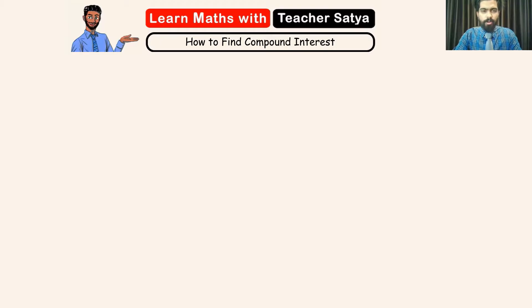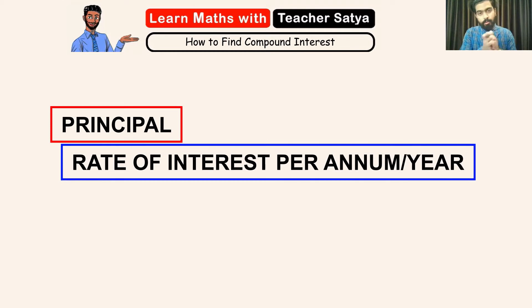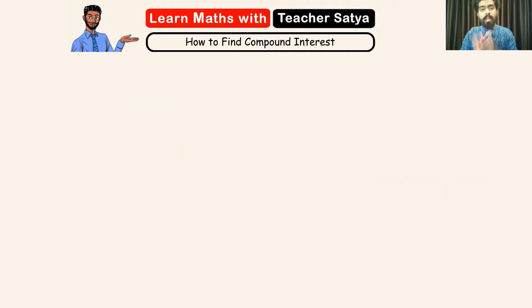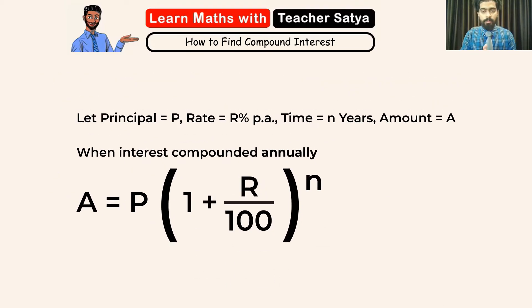Now, in order for us to find the compound interest, we need to know three main things which are the principle, the rate of interest per annum or per year and the duration. And we'll be using this formula to go ahead and solve a few questions.